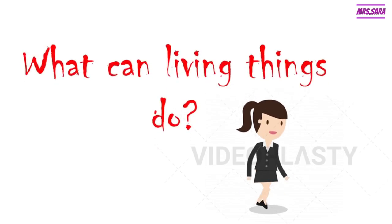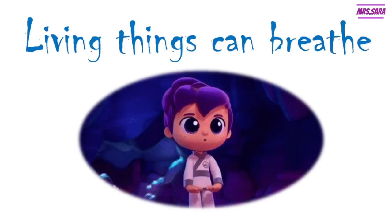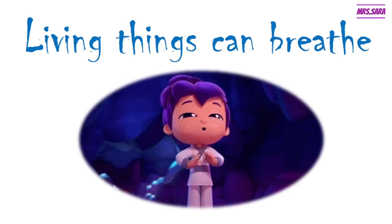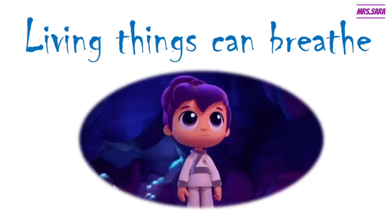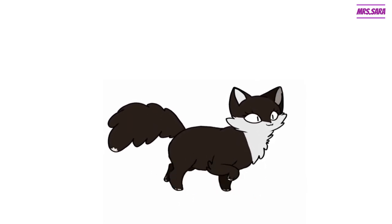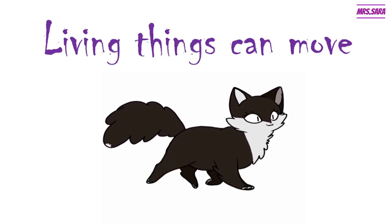What can living things do, Primer One? We said that we need three things. What can we do as living things? Living things can breathe in air — we are living things, we can breathe. What else? The cat is walking or moving, so living things can move.